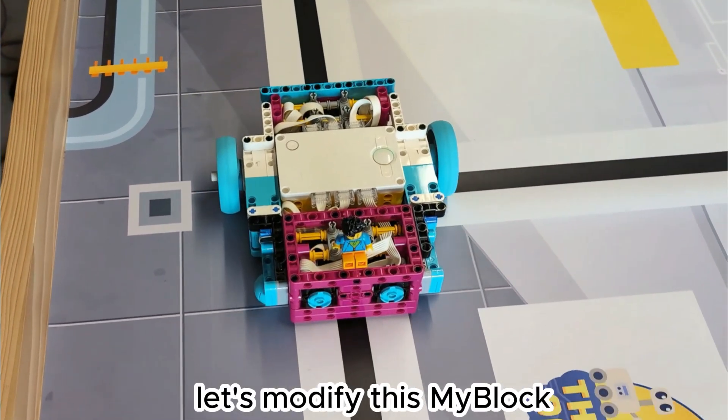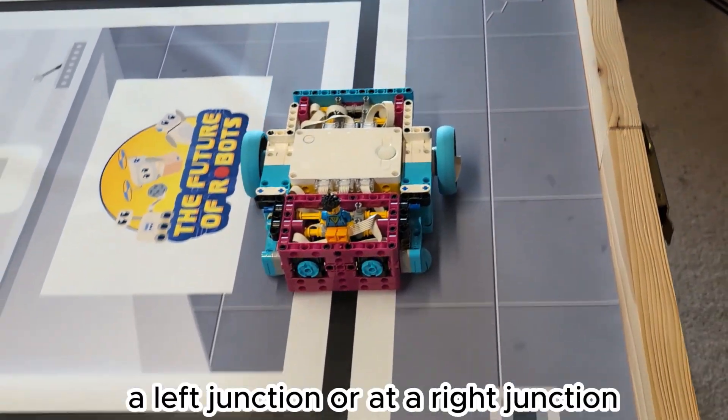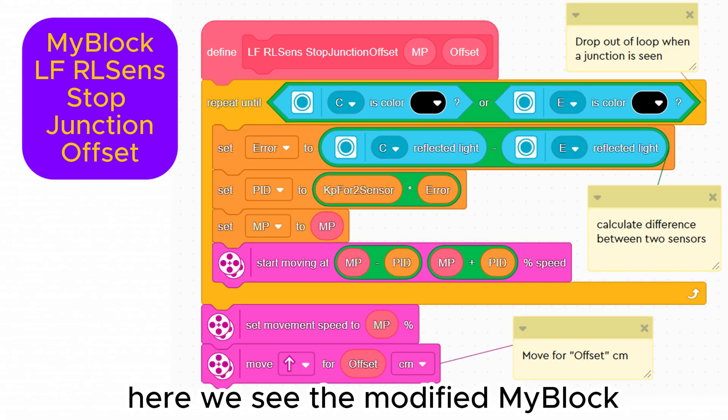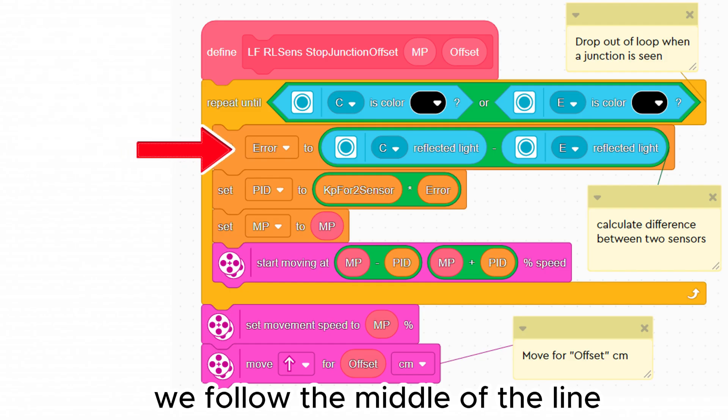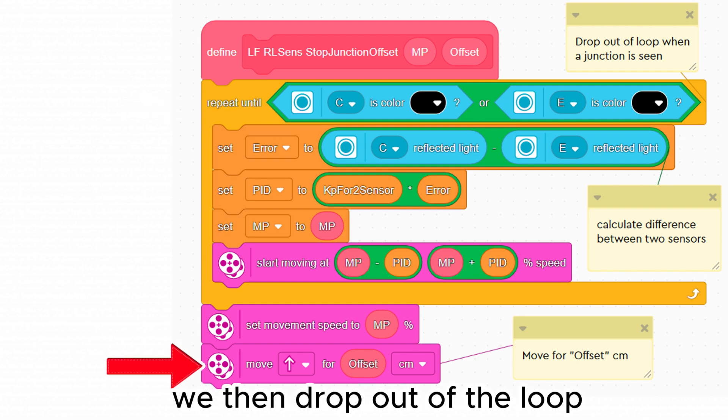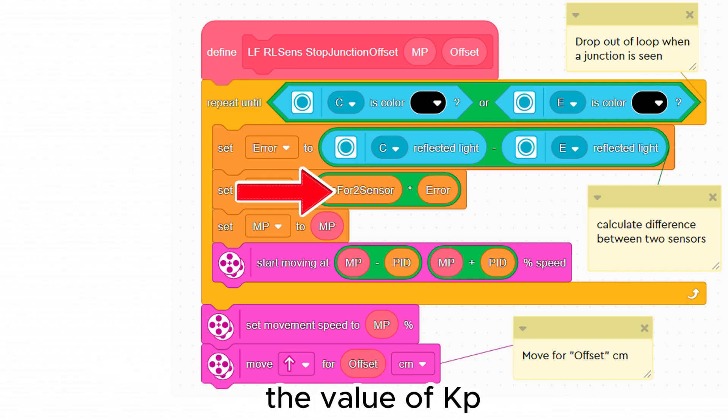Okay now let's modify this my block to work with two sensors at the front so we can stop at a left junction or at a right junction. Here we see the modified my block using both sensors. We follow the middle of the line until either of the front color sensors sees a black line. We then drop out of the loop and move forwards by the distance specified in the offset parameter. As we have seen the value of KP is different for two sensors.